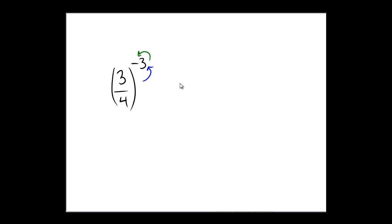we start with 3 fourths. The blue indicates we need to do a cubing. Let's see. 3 times 3 is 9, 9 times 3 is 27. On the bottom, 4 cubed: 4 times 4 times 4.